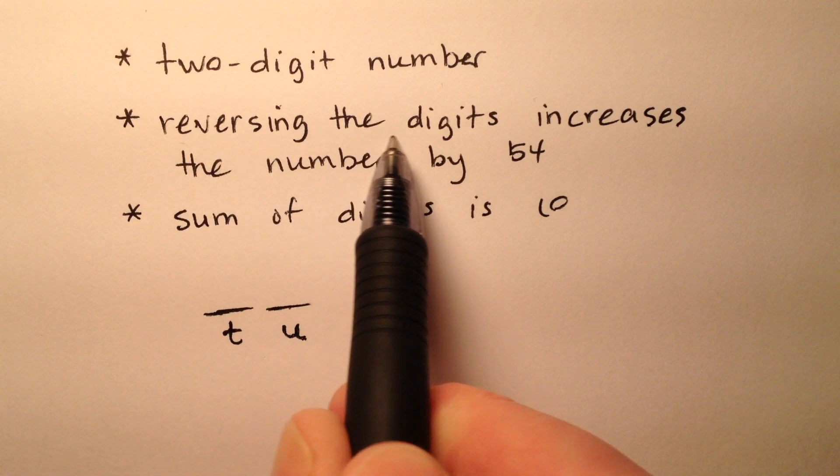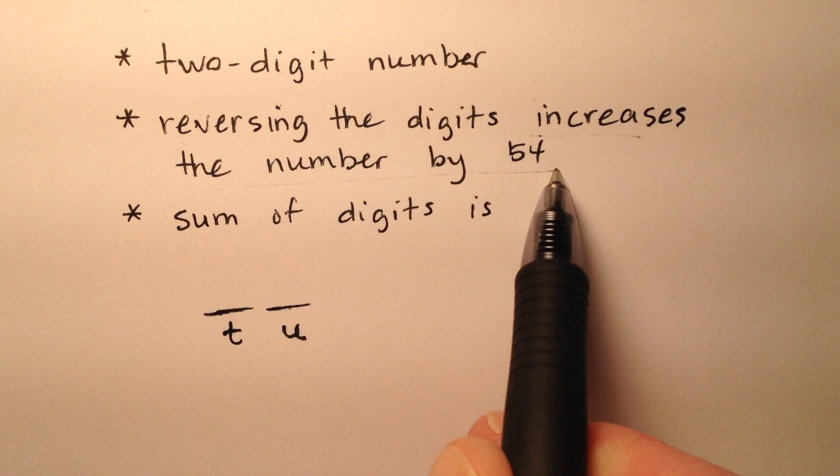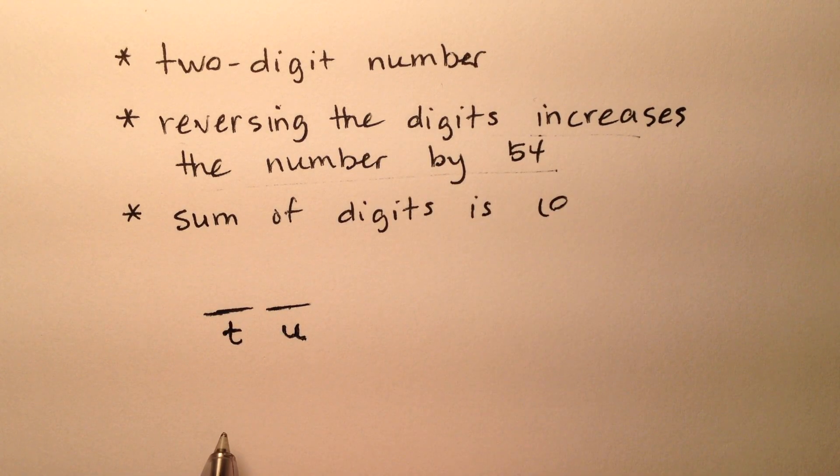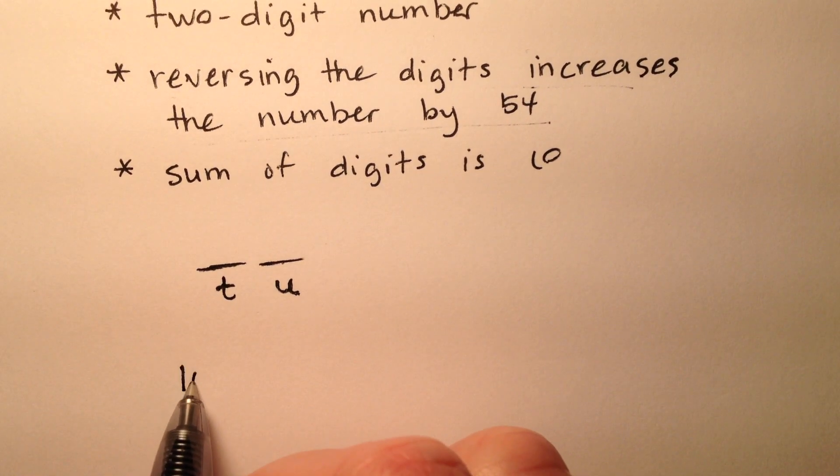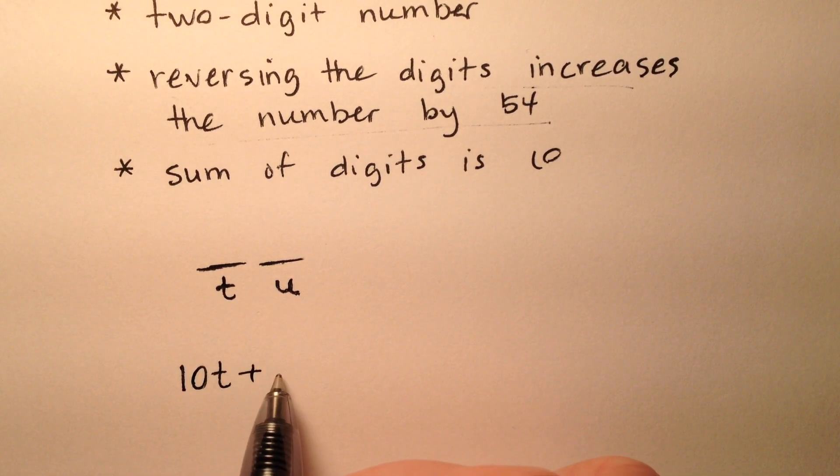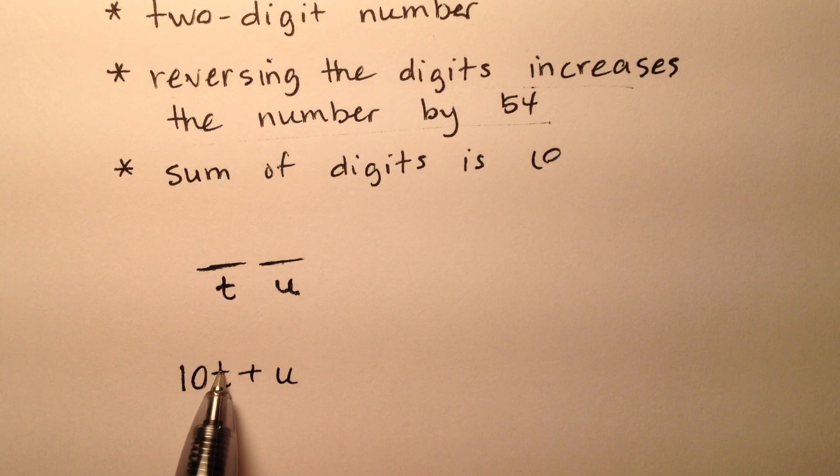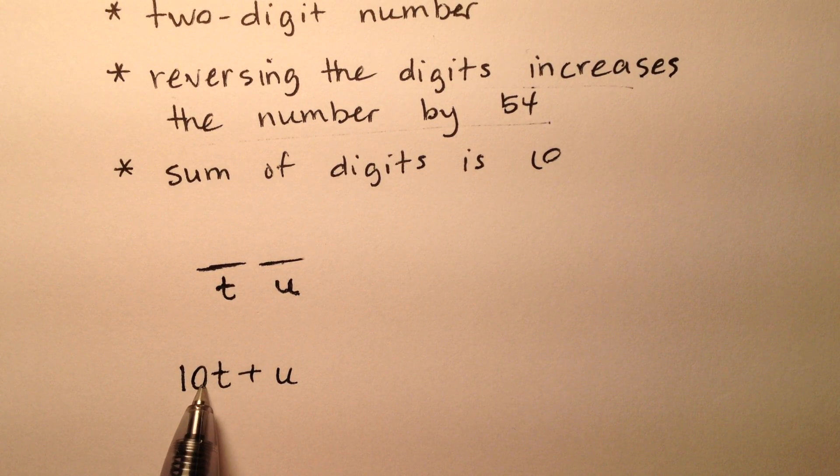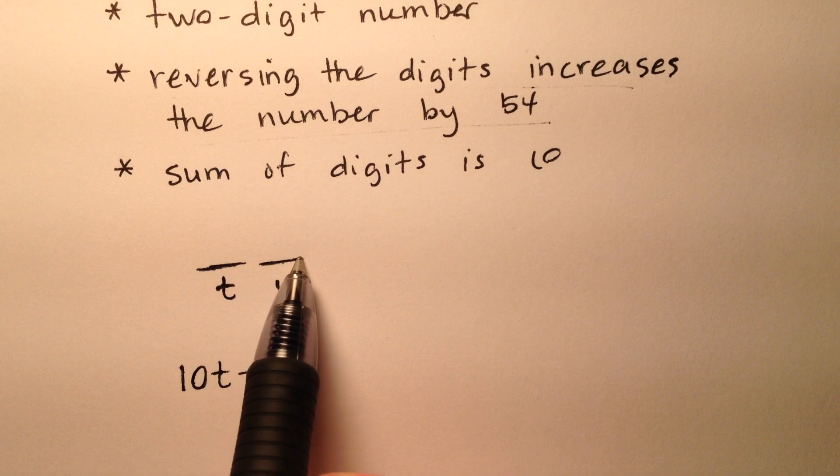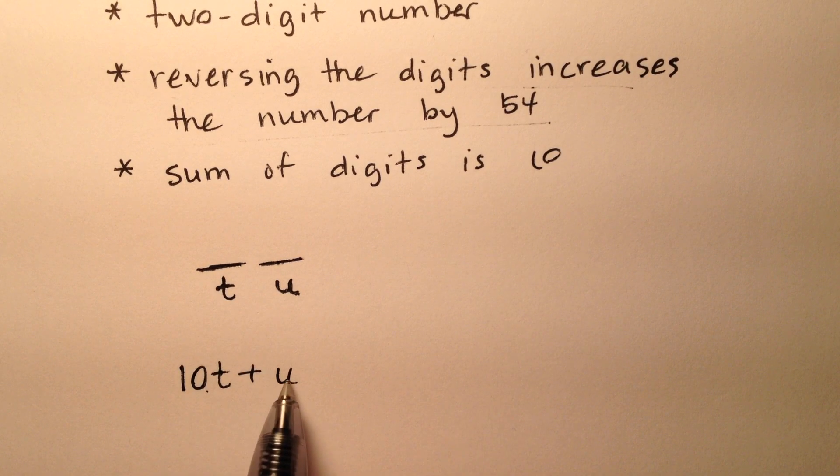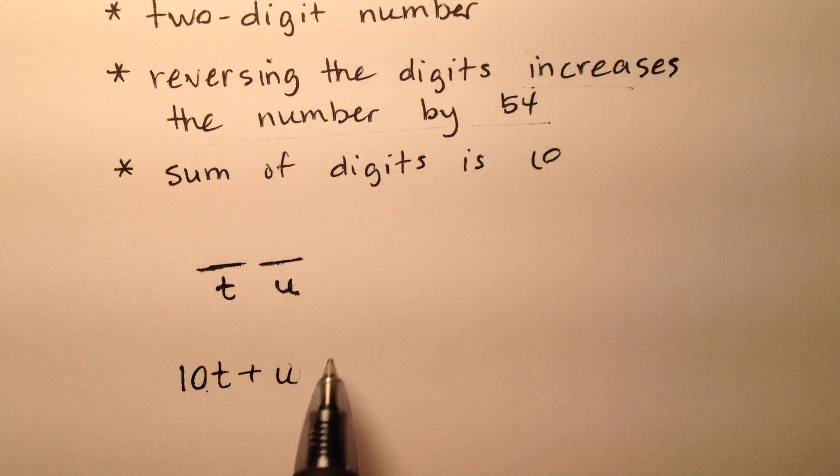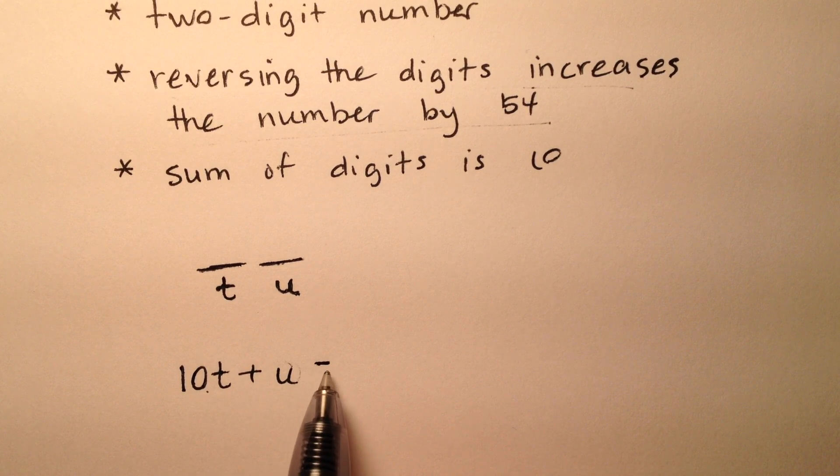Reversing the digits increases the number by 54. So our original number is 10T plus U. Again, it's 10T because this digit, whatever it is, when I multiply it by 10, moves it from the ones place to the tens place, and then I have the units place here. When I switch the order,